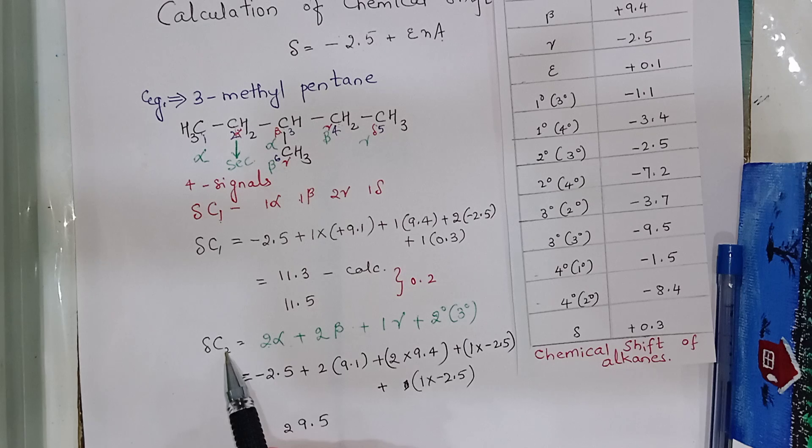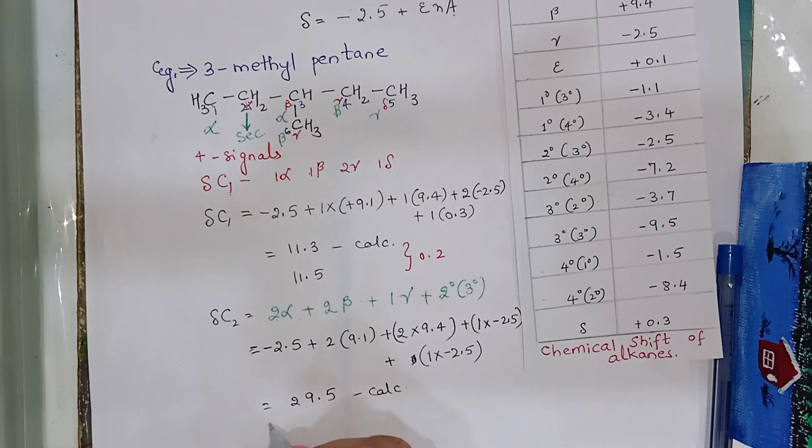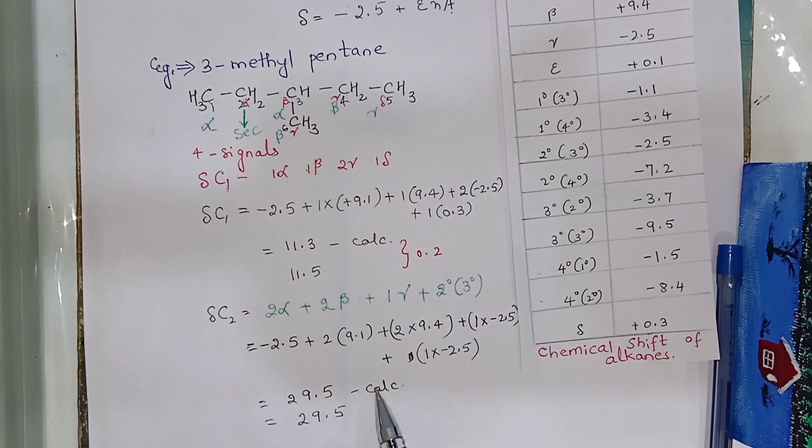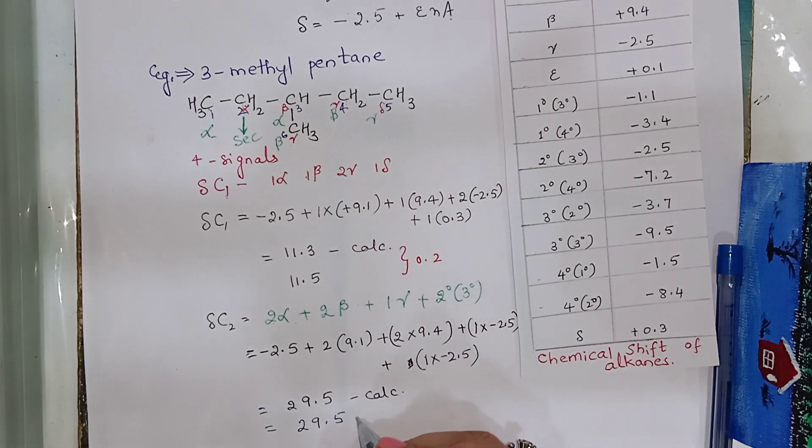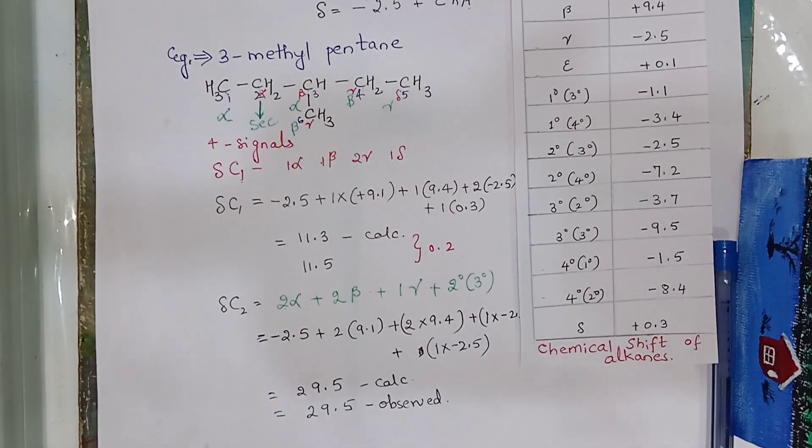So, chemical shift for carbon 2 is 29.5. This is calculated value. But, when we observe it experimentally, it is found to be 29.5 which is very much exact to the calculated value. So, again, this observation, this calculation is valid.